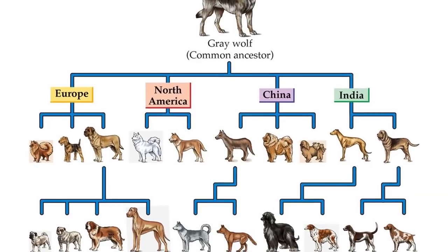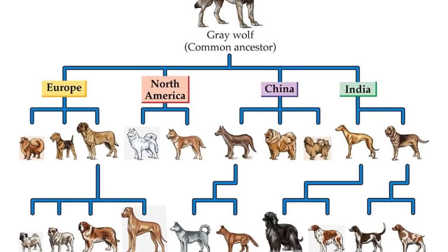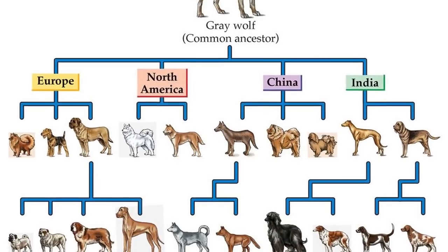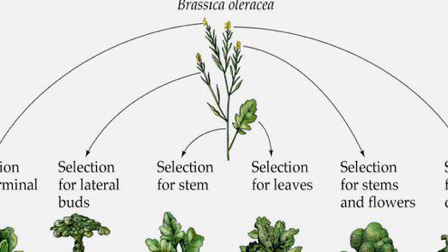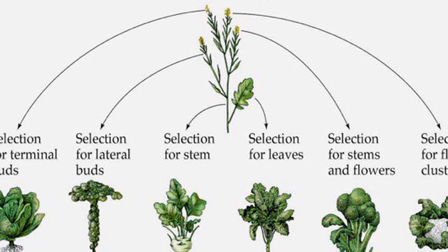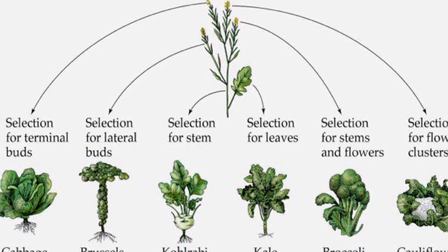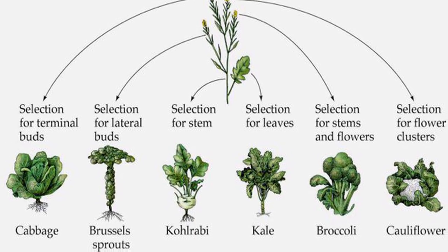Human beings had already been artificially selecting traits in plants and animals for millennia. By selecting preferred traits in wolves, human beings managed to selectively breed over 300 morphologically distinct breeds of dog. By selecting preferred traits in mustard plants, humans have managed to selectively cultivate hundreds of cultivars such as cabbage, brussels sprouts, and broccoli.